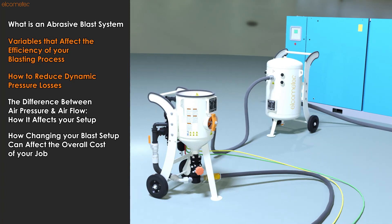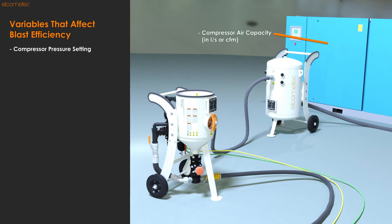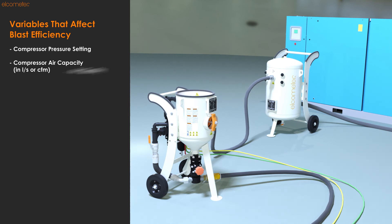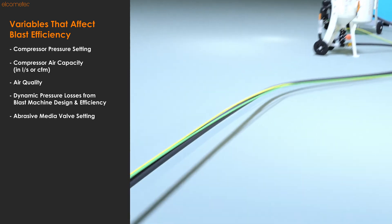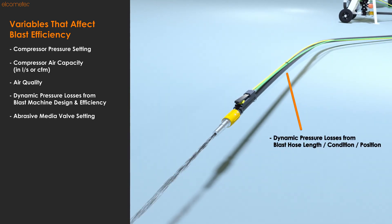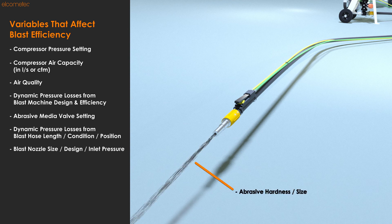Going through the blast system from start to finish, the variables that affect the efficiency of your blasting process are: compressor pressure setting; compressor air capacity in either litres per second or cubic feet per minute; air quality; dynamic pressure losses from your blast machine's design and efficiency; abrasive media valve setting; dynamic pressure losses from the length, condition and positioning of your blast hose; the size, design and inlet pressure of your blast nozzle; and your chosen abrasive's characteristics, such as hardness and size.